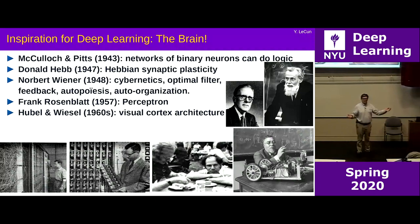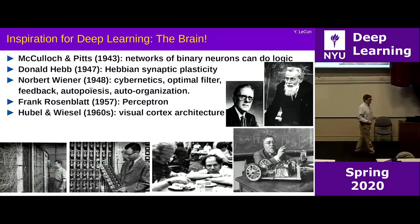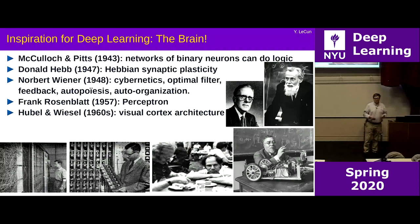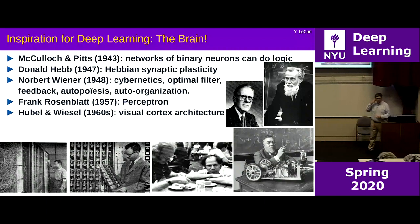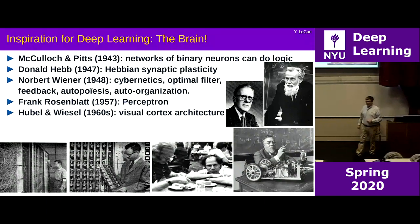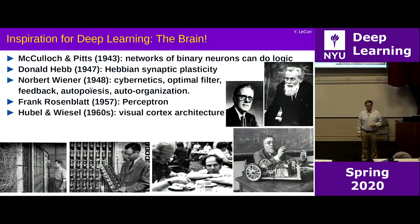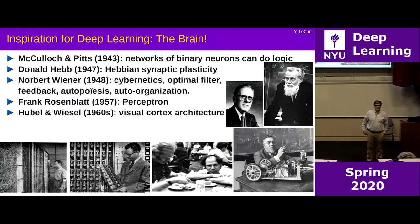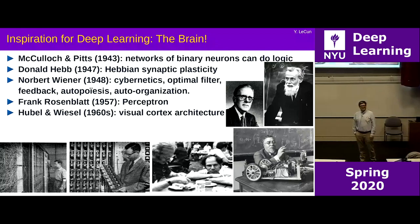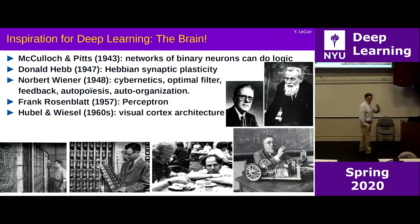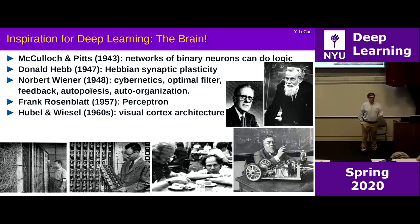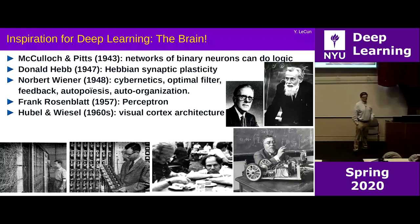Airplanes and birds share underlying principles of flight but differ greatly in details — they both have wings and generate lift but airplanes don't flap. The history goes back to a field called cybernetics. It started in the 1940s with McCulloch and Pitts, who had the idea that if neurons are threshold units that are on or off, you can build Boolean circuits and do logical inference with neurons.